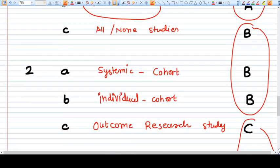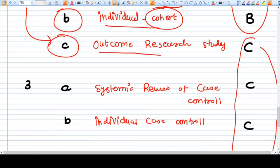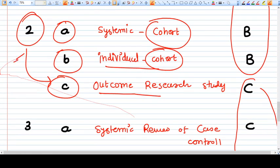Now come to level 2. Level 2a means systematic studies of cohort studies. Level 2b is individual cohort studies. And level 2c is outcome research study. So level 2 is around cohort studies.